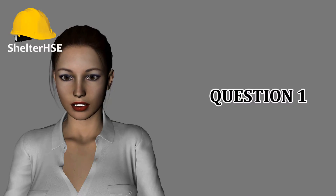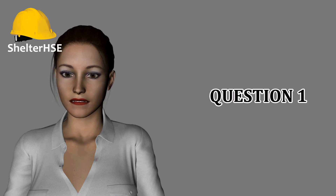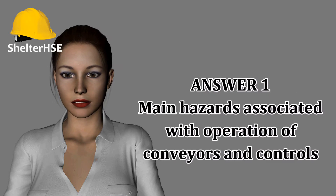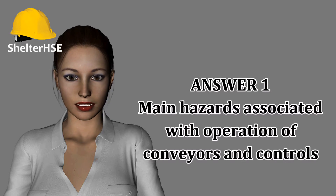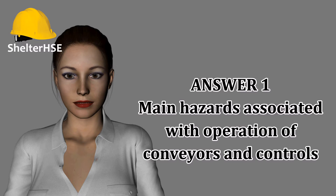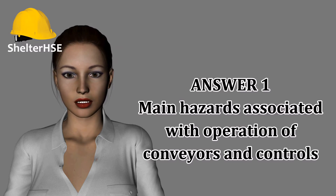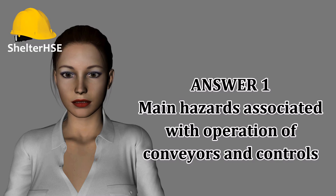Outline what are the main hazards and precautions associated with the use of conveyors. The main hazards associated with conveyors are: in-running nip points, where fingers might be drawn into moving parts; entanglement, where loose clothing might become entangled with rotating parts; and falling objects from overhead conveyor systems.